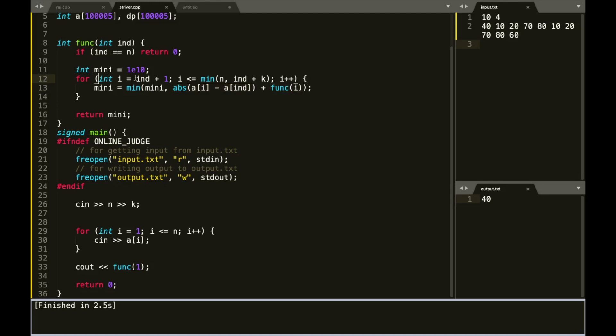Since we're trying all the possible combinations like from index, we're moving till index plus 1, index plus 2, index plus 3. Now whichever combination will give us the minimum, we will take that similar to the thing that we did in the problem Frog 1. And then we will return the minimum of all of the states.